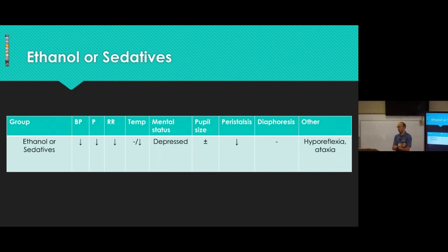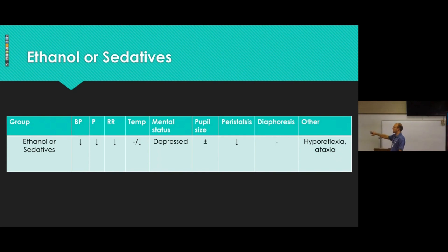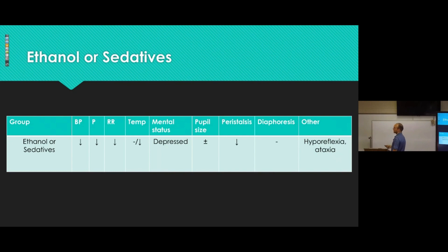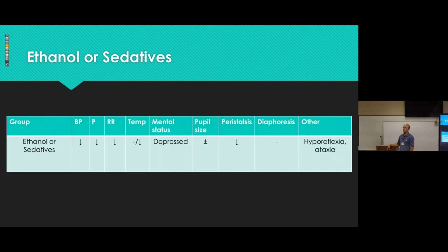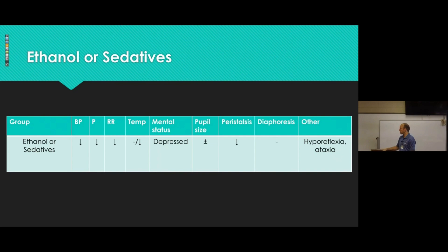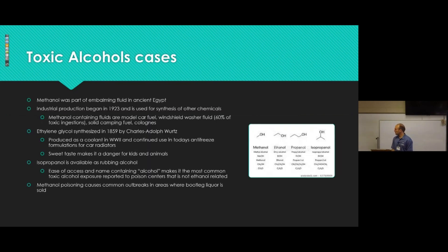For the big vital sign overview by toxidrome: ethanol or sedatives like benzodiazepines or barbiturates — blood pressure decreased, pulse decreased, respiratory rate decreased, temperature either direction if from environmental exposure, pupils sluggish, no diaphoresis, hypo-reflexic, ataxic. These patients may have been lying on the floor all day uncovered, contributing to hypothermia — something to keep in mind.